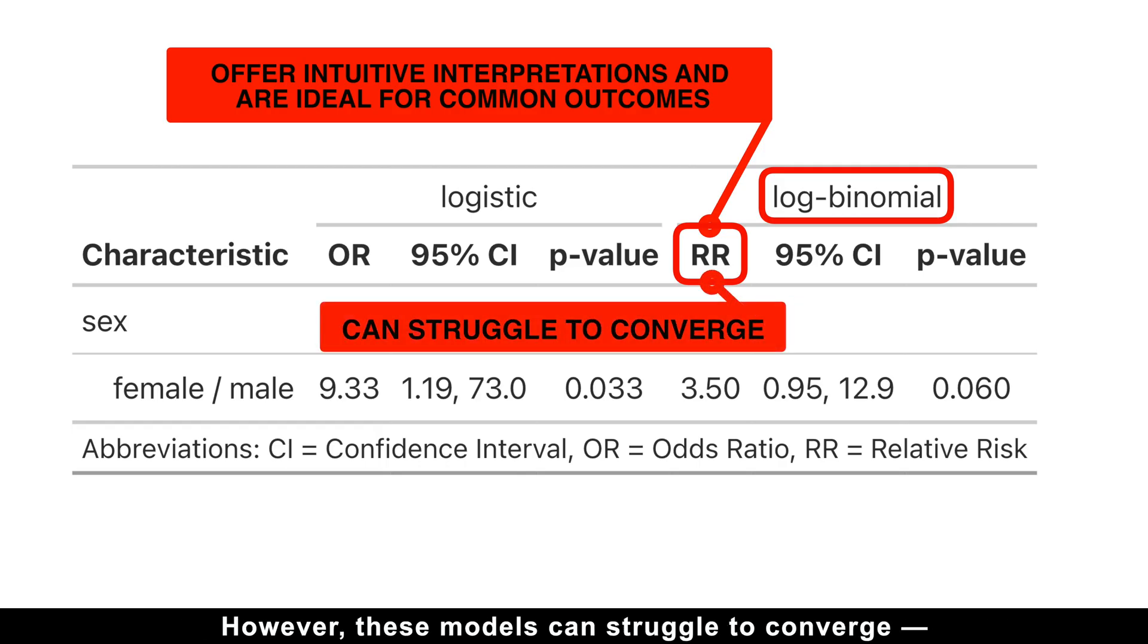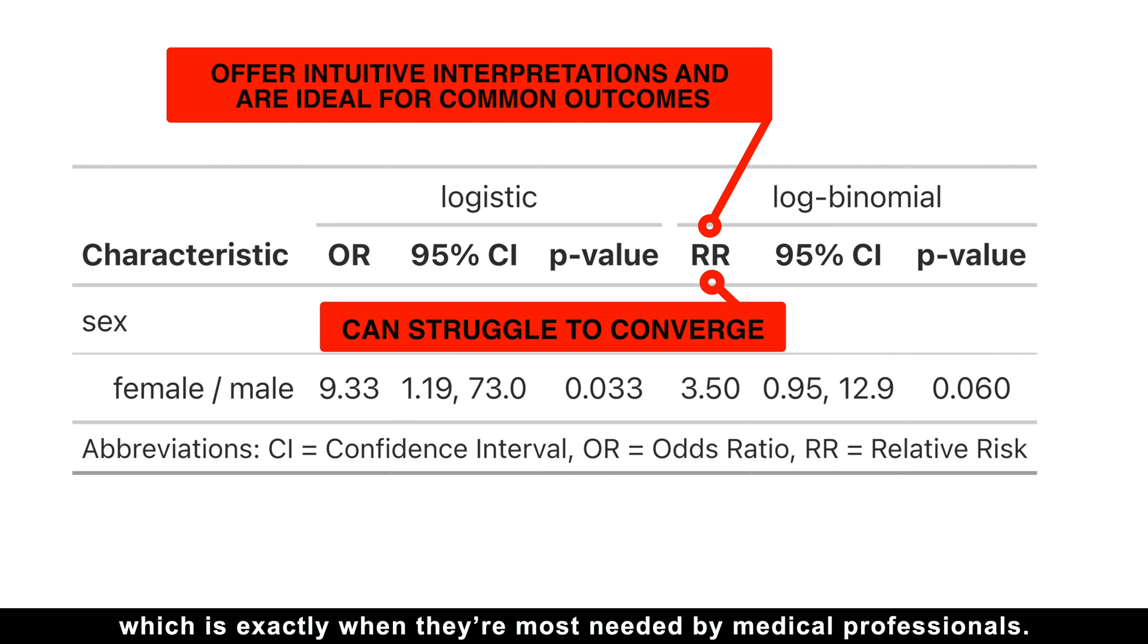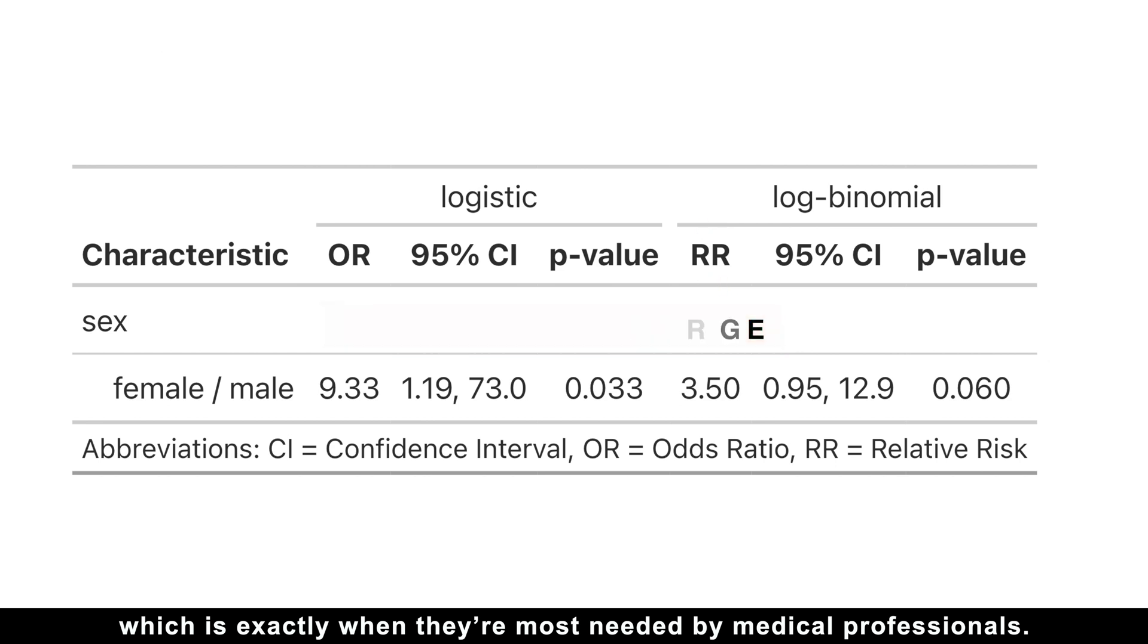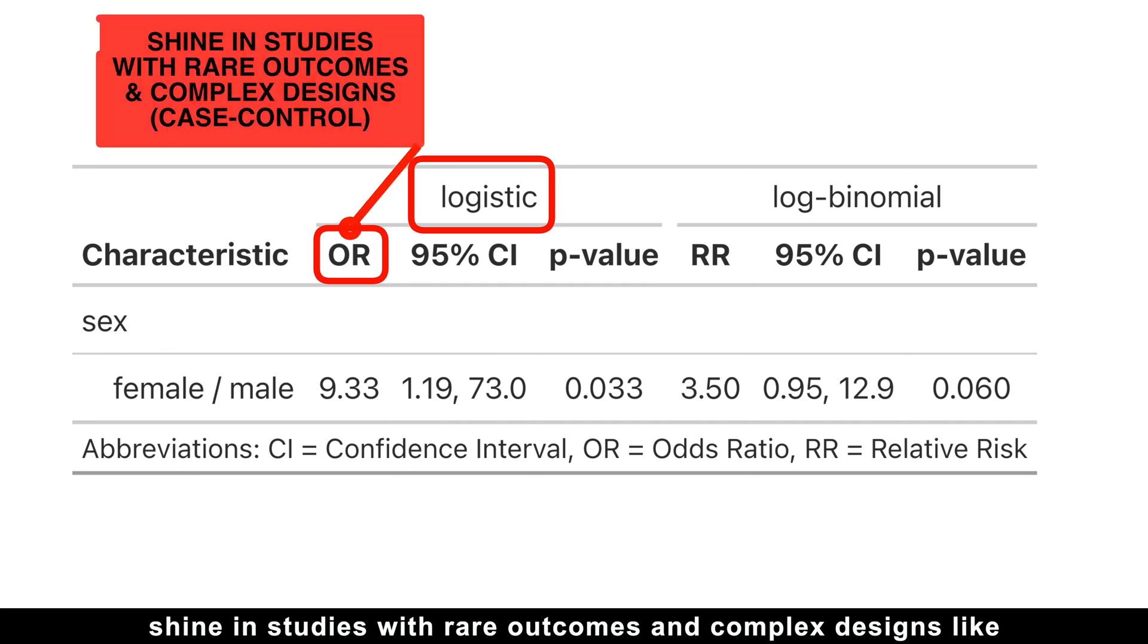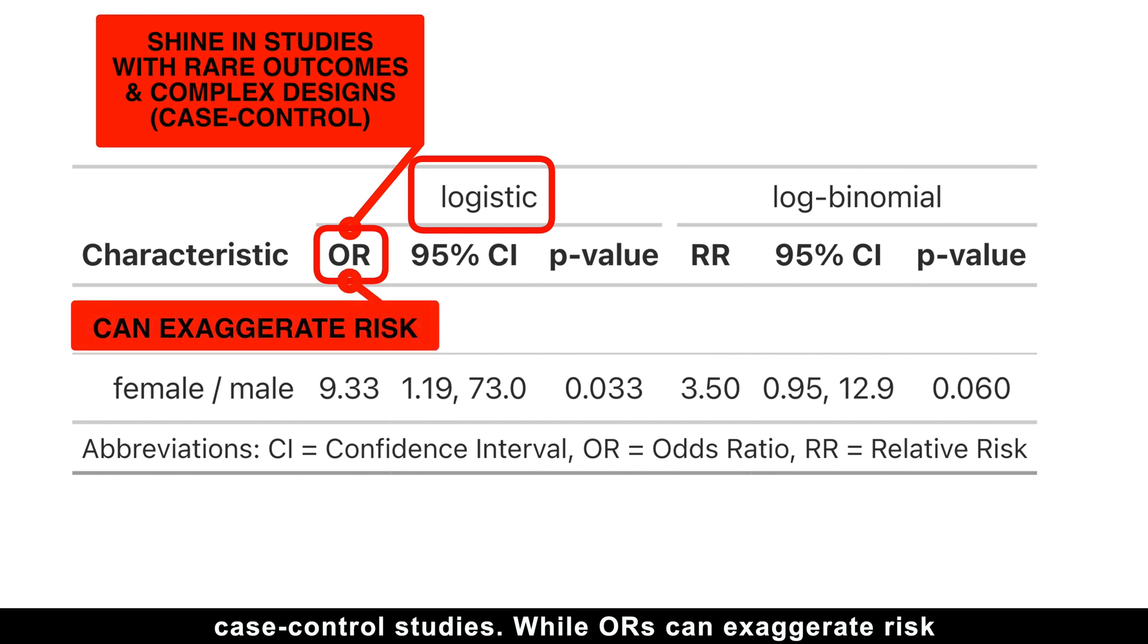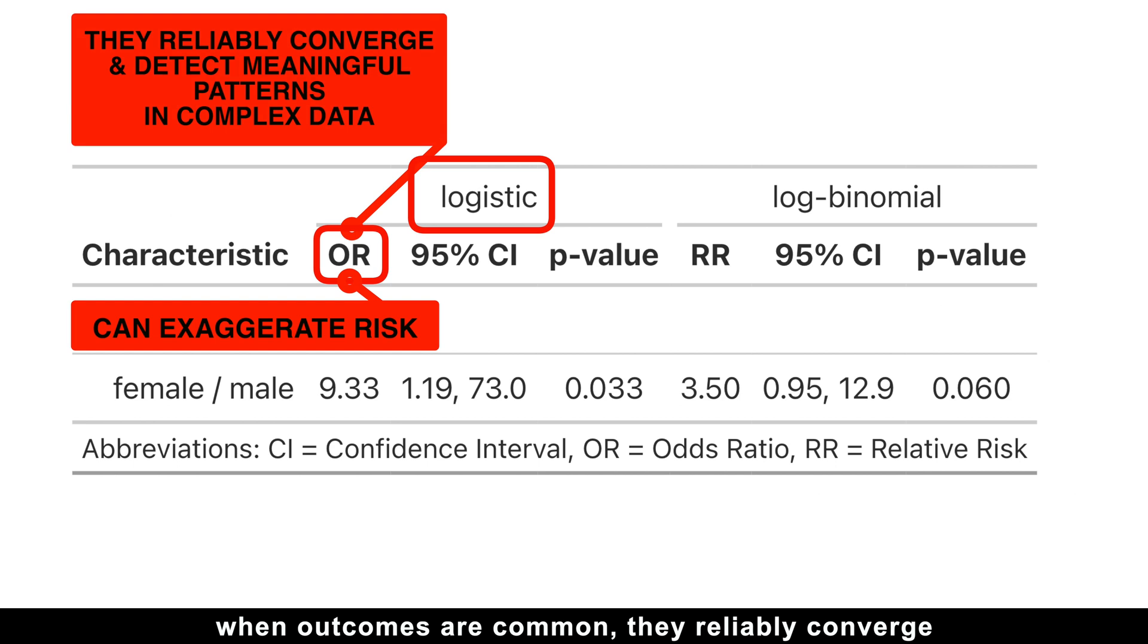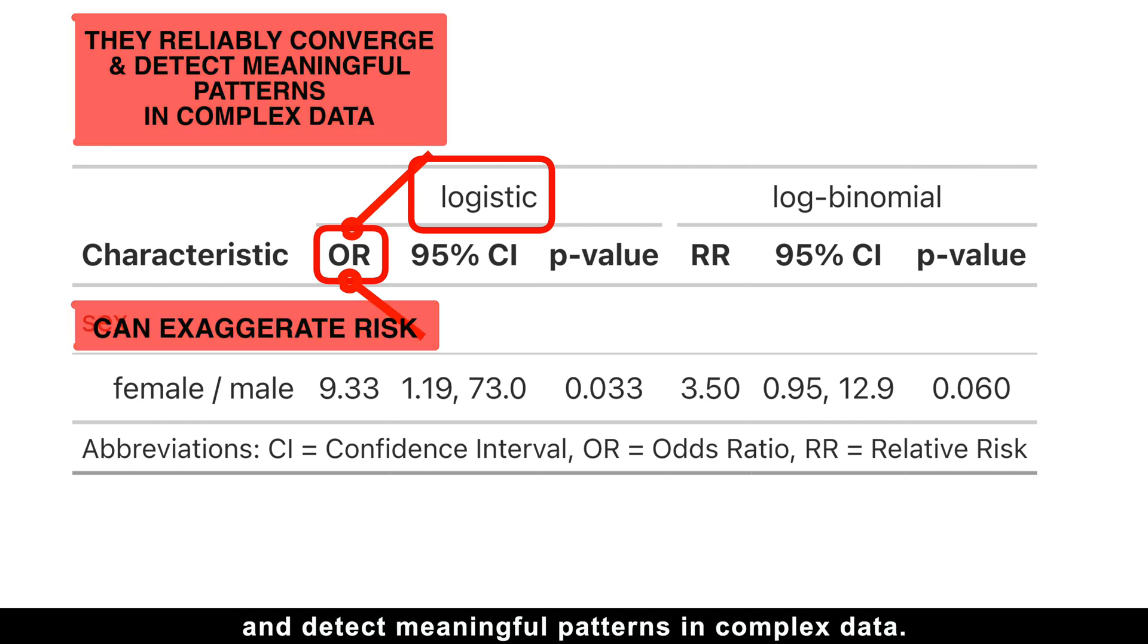Risk ratios estimated by log-binomial models offer intuitive interpretations and are ideal for common outcomes. However, these models can struggle to converge, especially with rare events, which is exactly when they are most needed by medical professionals. Meanwhile, odds ratios from logistic regression shine in studies with rare outcomes and complex designs, like case control studies.